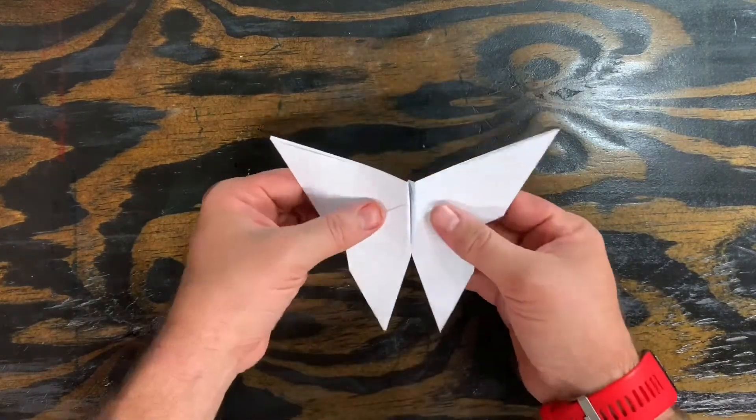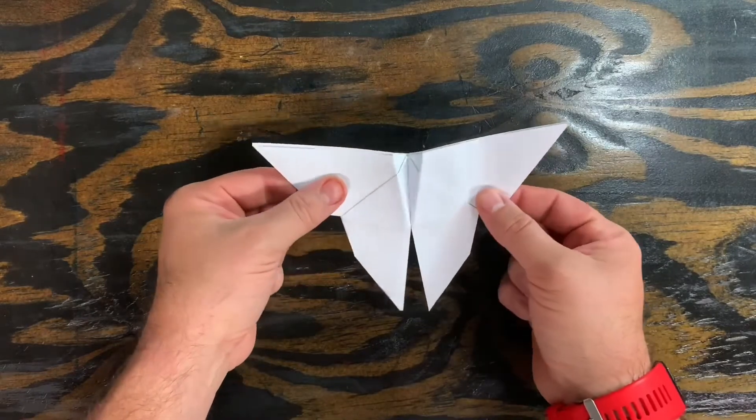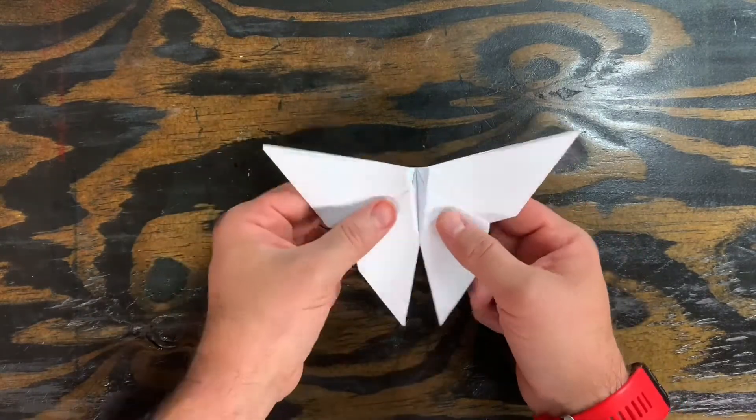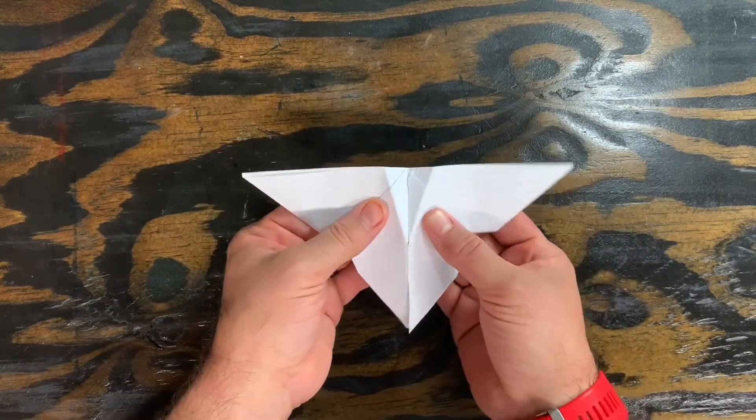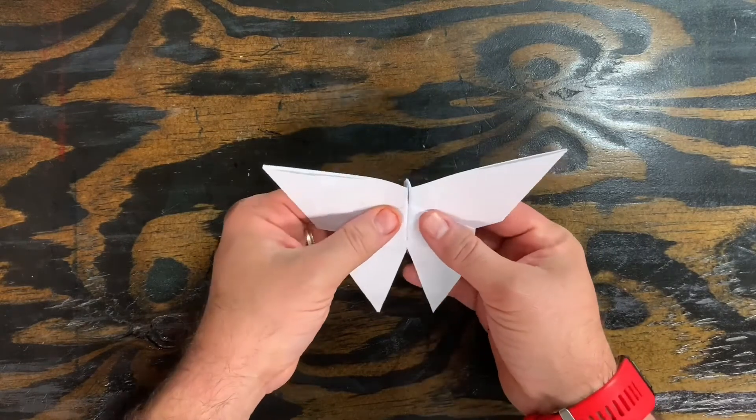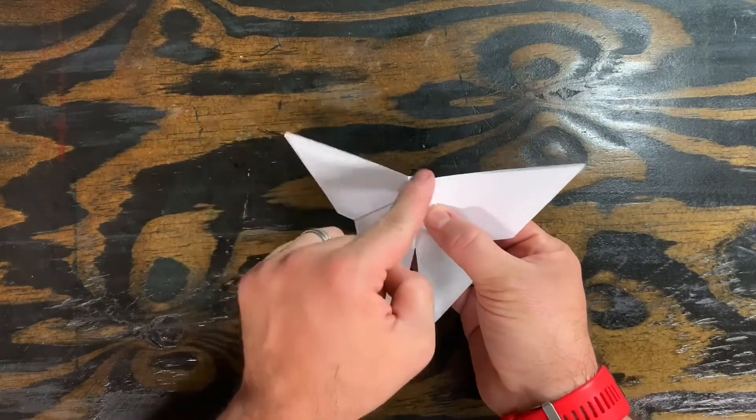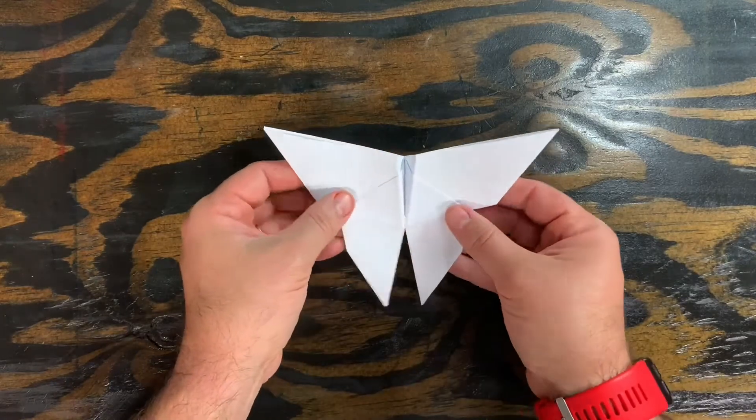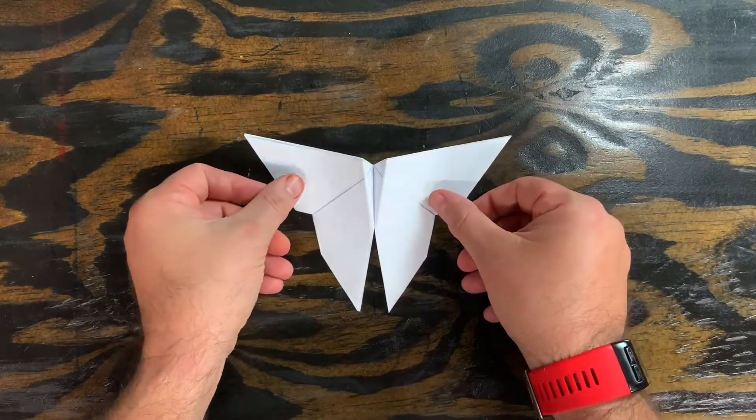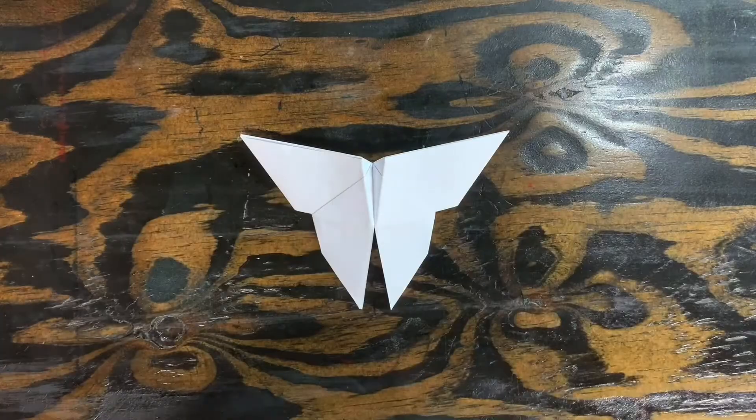And then we open our butterfly. I'm gonna flip it over. Loosen up that middle body part a little bit. We don't want it to be flat. Because that doesn't look so good. But we don't want it to be completely closed either. It's nice to see the body in between the wings. And there is our origami butterfly.